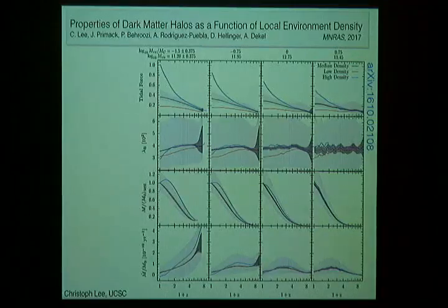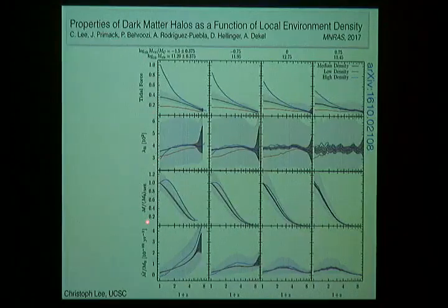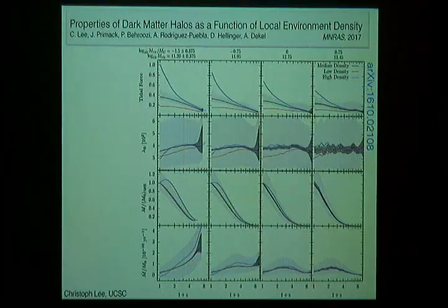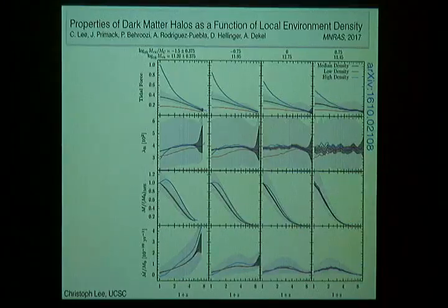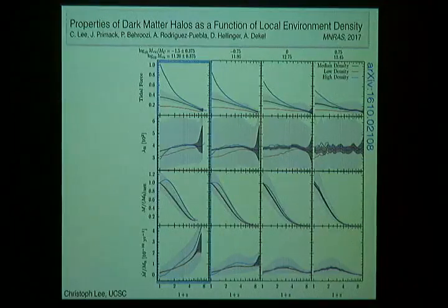Expanding on this and looking at it in a different way: this plot shows the evolution of halos, with log(1+z) on the x-axis and halo properties — tidal force, spin parameter, mass, and mass accretion rate — on the y-axis. I selected groups of halos at redshift zero: blue is halos in high density regions, black is median, and red is low density regions, then followed the progenitors back in time.